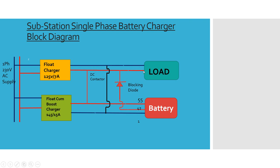Whenever you give the supply, the float charger will give a DC output and that output is supplied to the load. At the same time the battery also gets charged — you can see the positive coming from the float charger and the negative is coming too, so the battery is getting charged and the load is also getting supply from the charger. In case the AC supply fails, the float charger is off and the boost charger is also off, so the battery will supply the load — from the 55-cell battery bank.